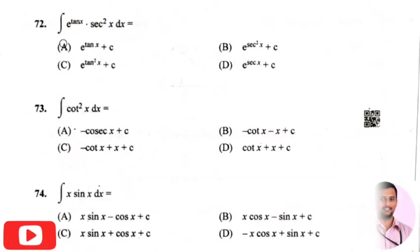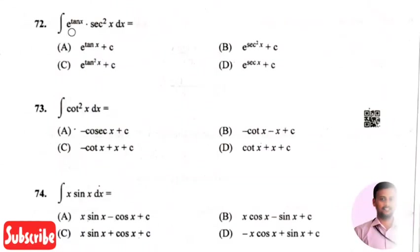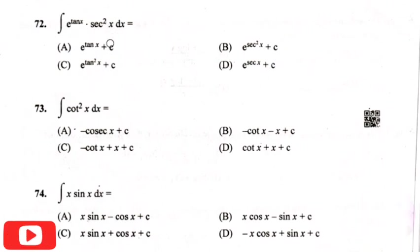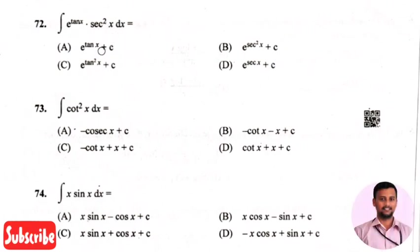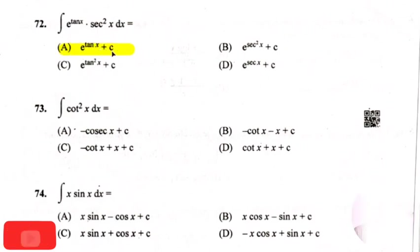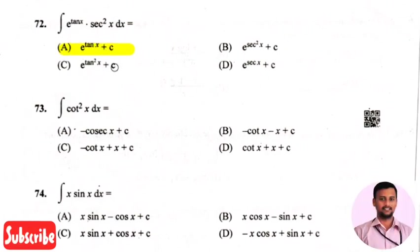The next question: the integration of e raised to tan x times sec squared x times dx. The right answer is option 1, that is e raised to tan x plus integration constant.